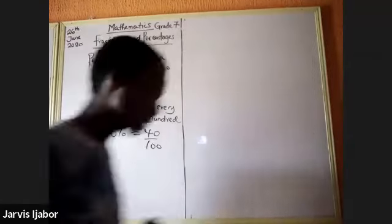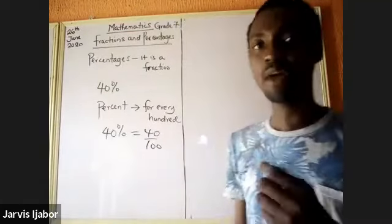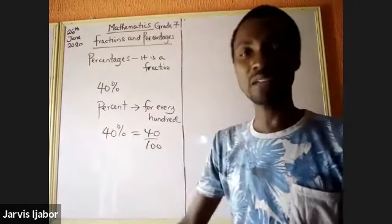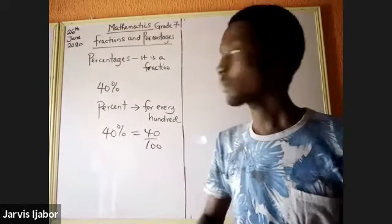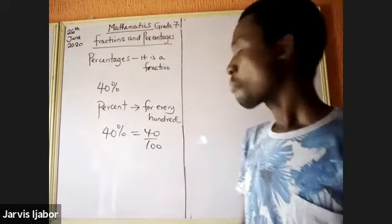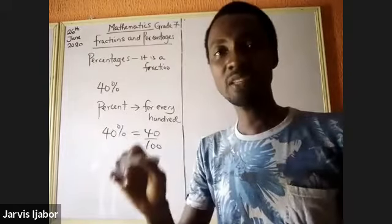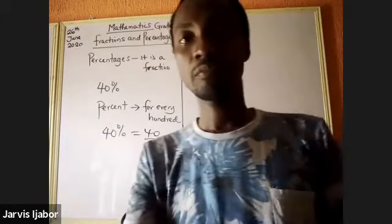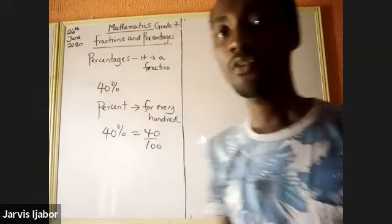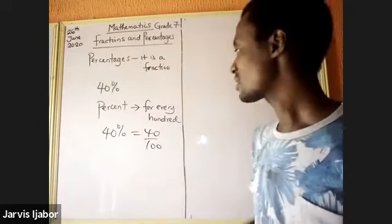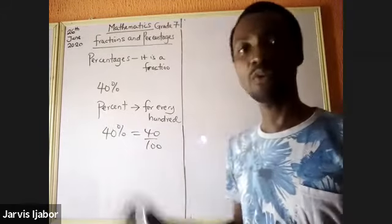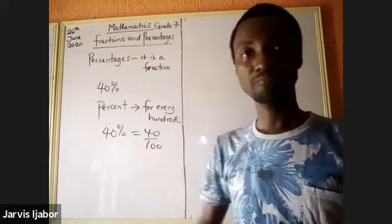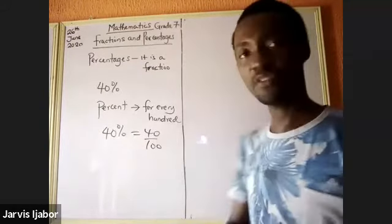Because sometimes the things we want to memorize should flow in us like water or like blood. 40 percent means 40 over 100 — 40 of every 100.